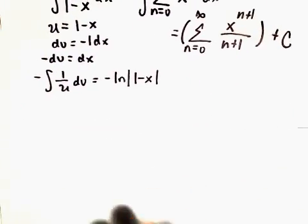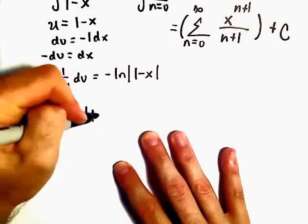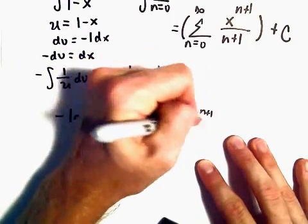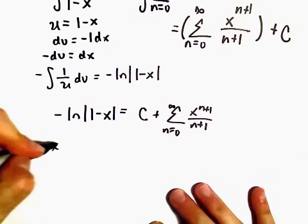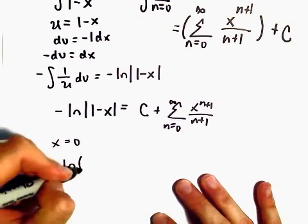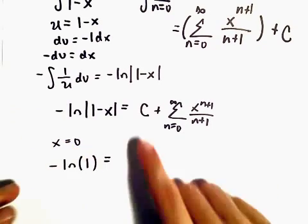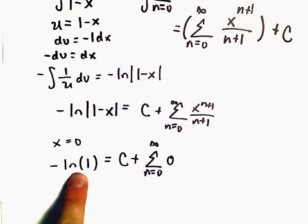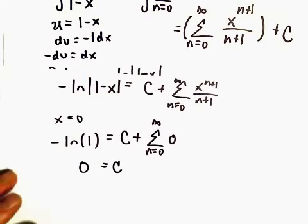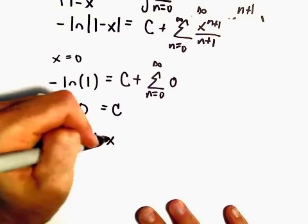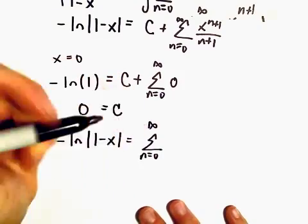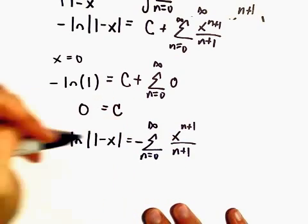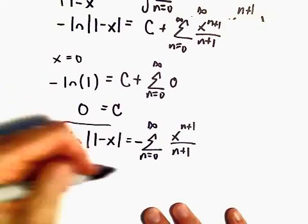So what we have at this point: negative the natural logarithm of (1 minus x) equals C plus our series n equals 0 to infinity of x to the n plus 1 over n plus 1. If we let x equal 0, on the left we get negative the natural logarithm of 1, and on the right we get C plus a bunch of zeros. Since the natural logarithm of 1 is 0, we get C equals 0. So negative ln(1 minus x) equals the series n equals 0 to infinity of x to the n plus 1 over n plus 1. We can multiply the negative over to get our series representation for ln(1 minus x).